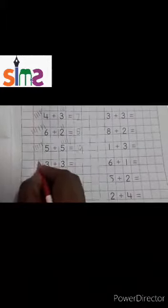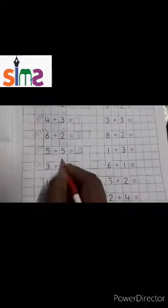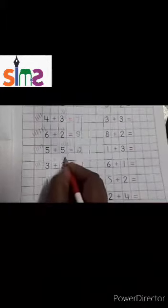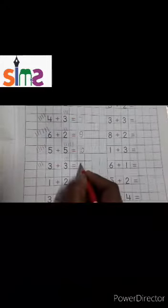Three: one, two, three. Three: one, two, three. Count all the lines: one, two, three, four, five, six. Three plus three is equal to six.